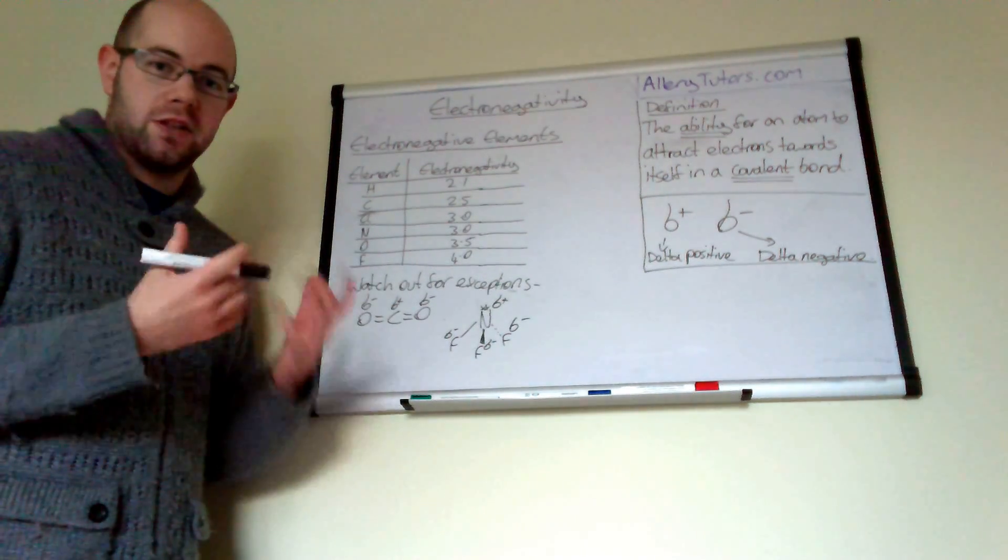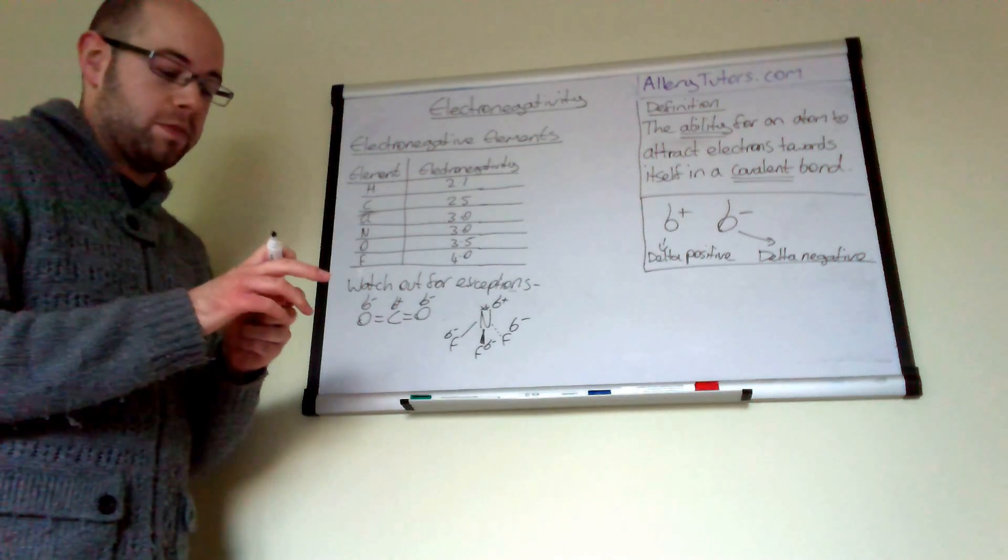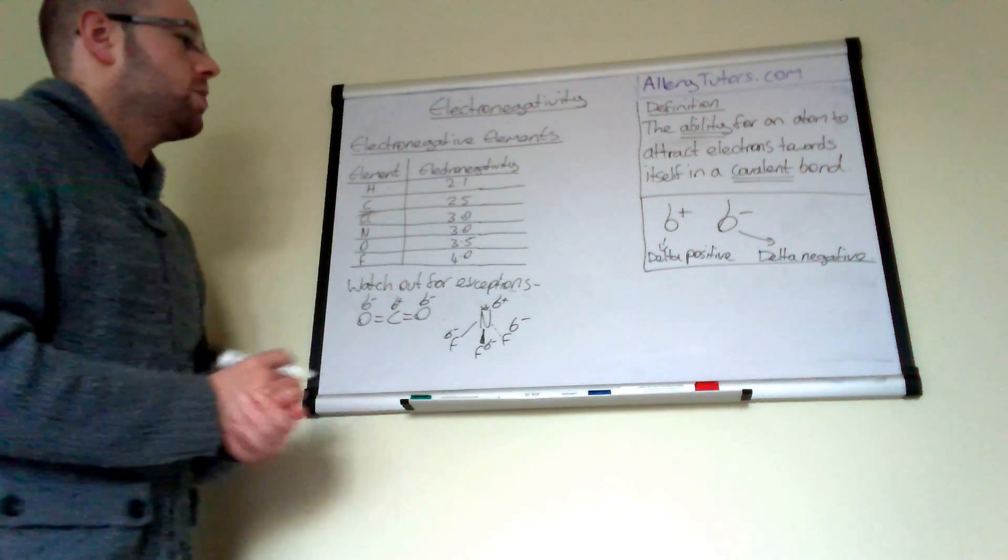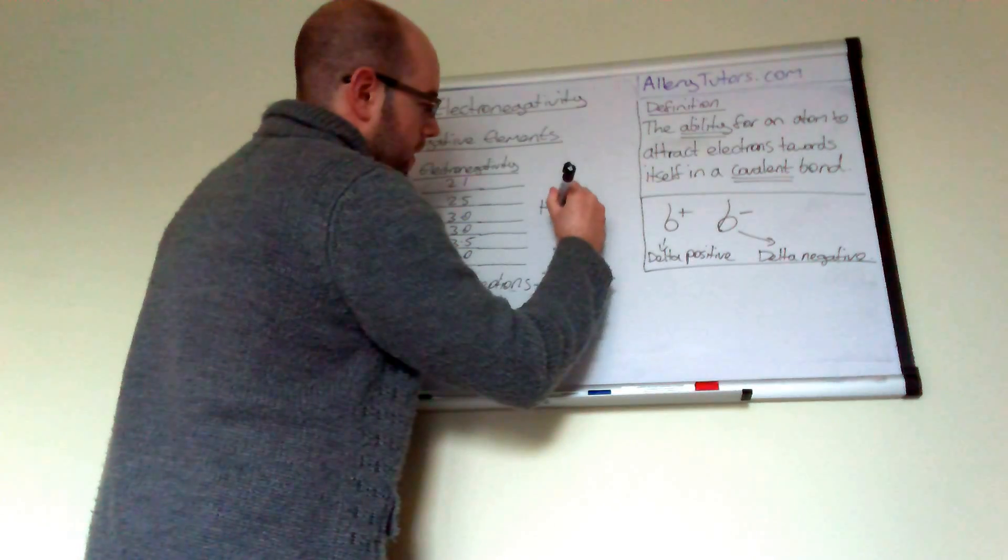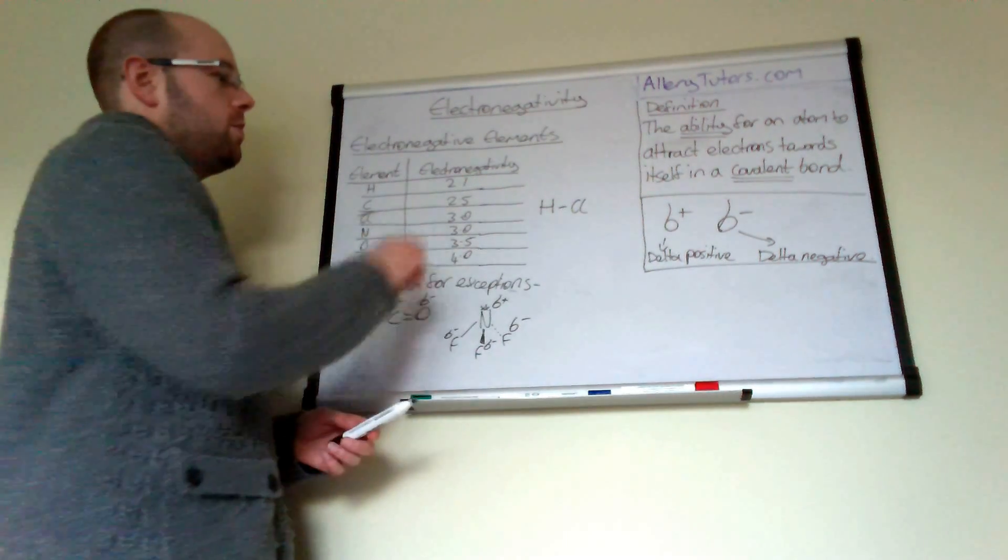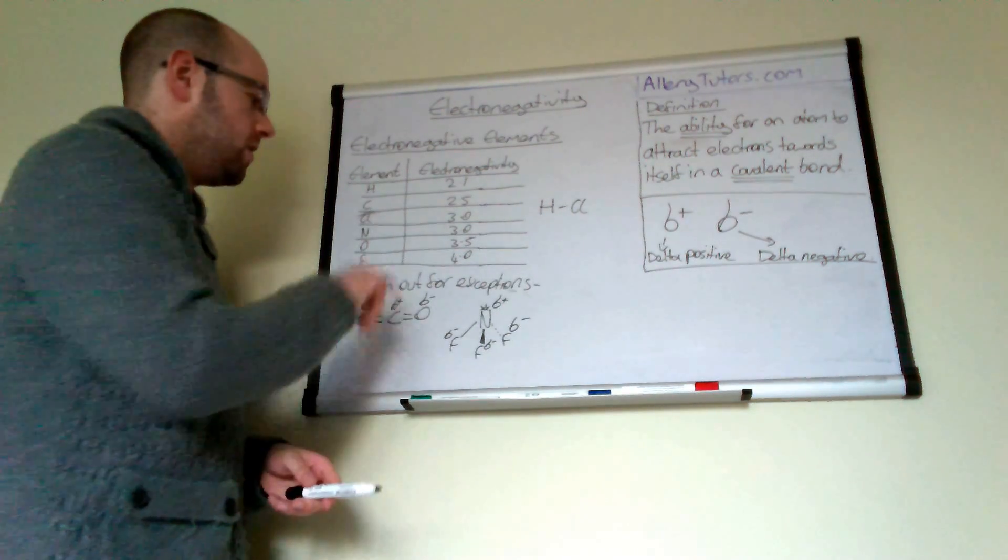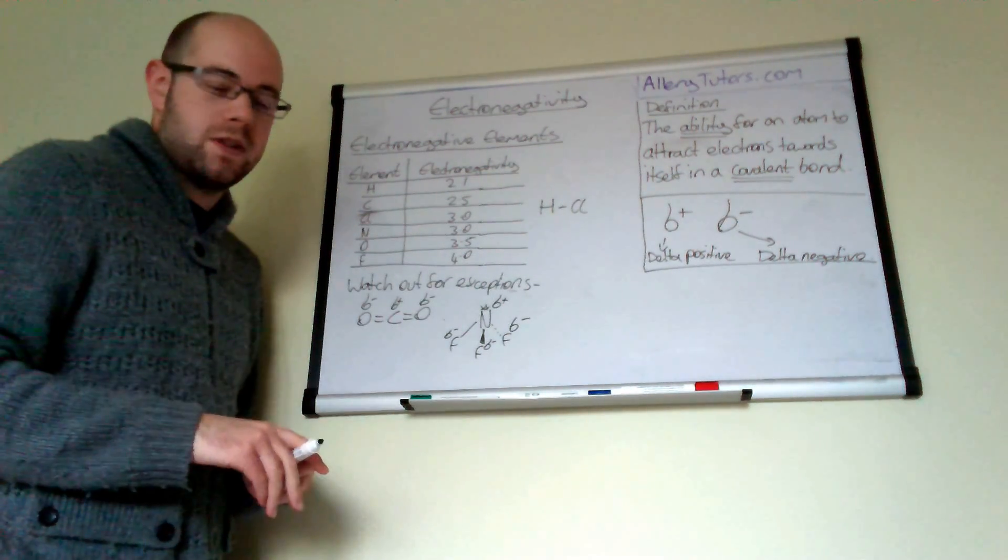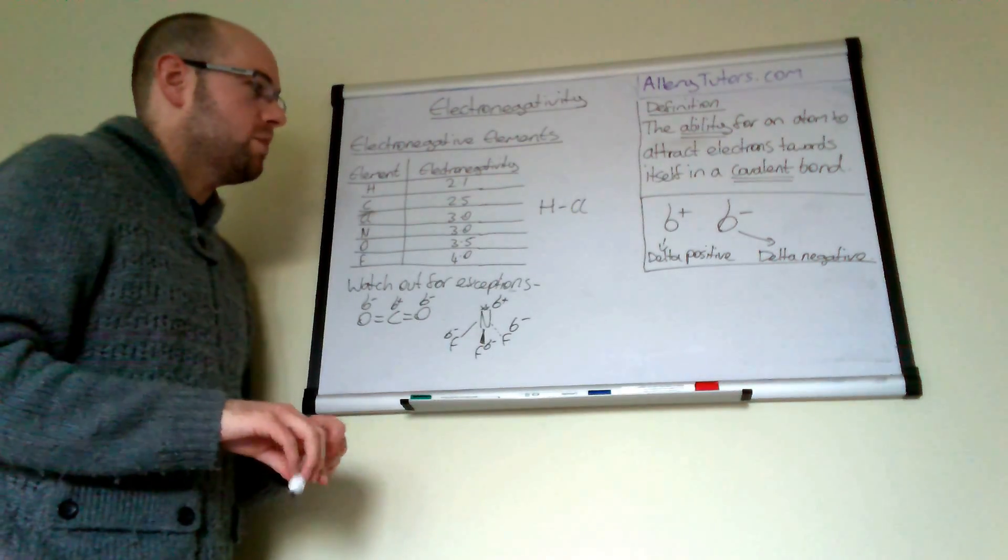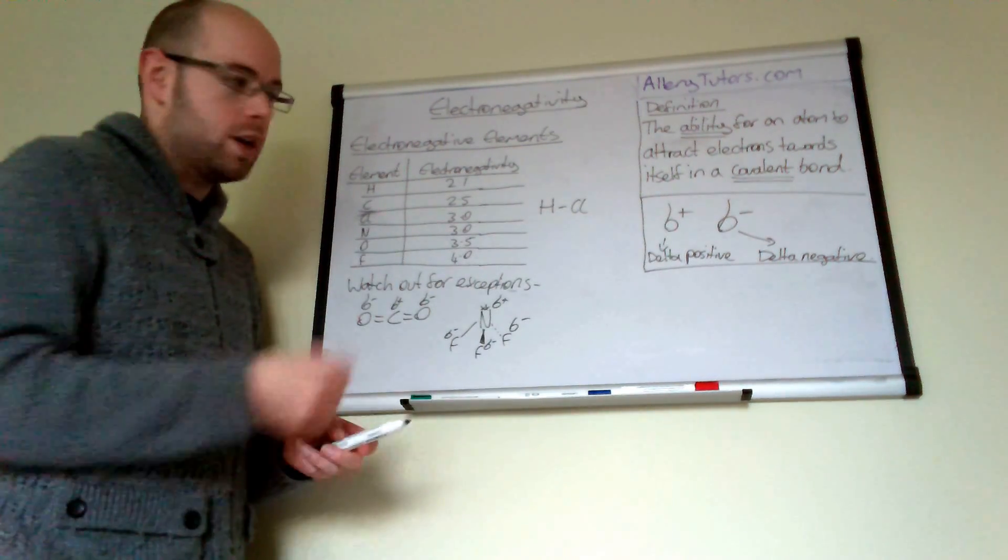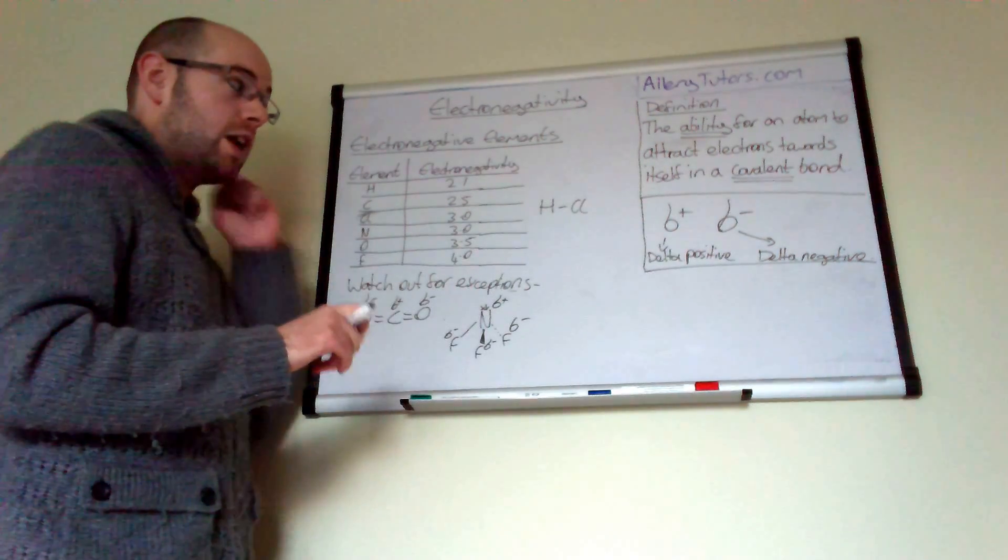We're going to look at what effect electronegativity has because it plays a massive role in how reactions proceed. We'll start with HCl. You can see that H has an electronegativity of 2.1, which means it's not that electronegative compared to chlorine, which has an electronegativity value of 3. This means chlorine will pull electrons towards itself more than hydrogen will.